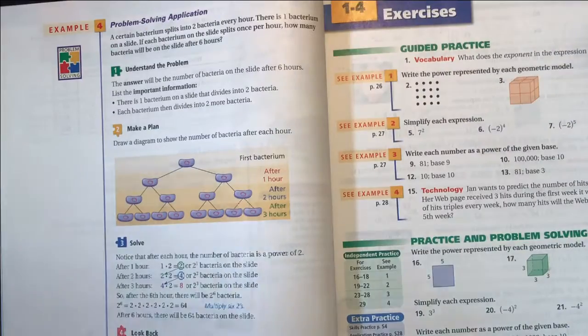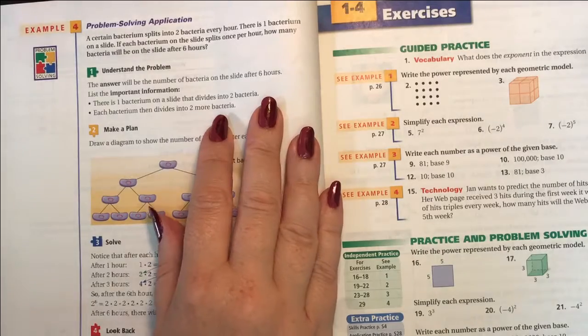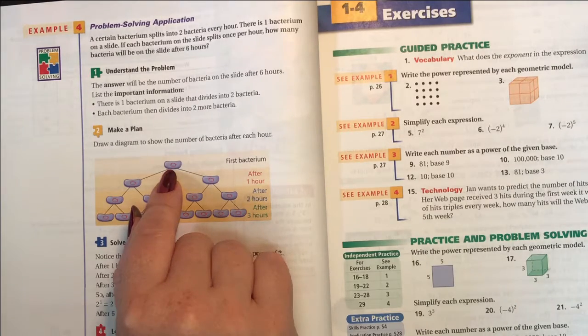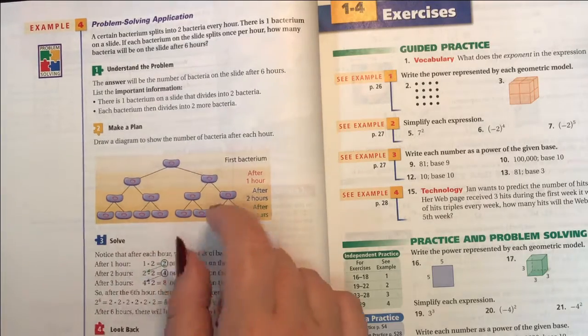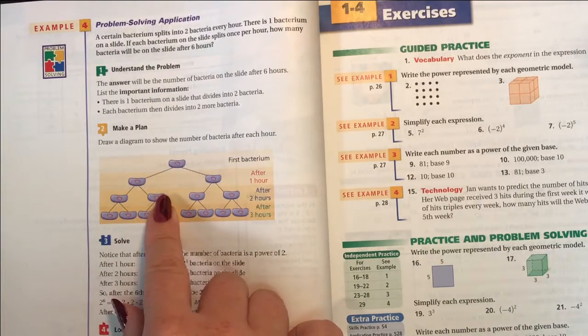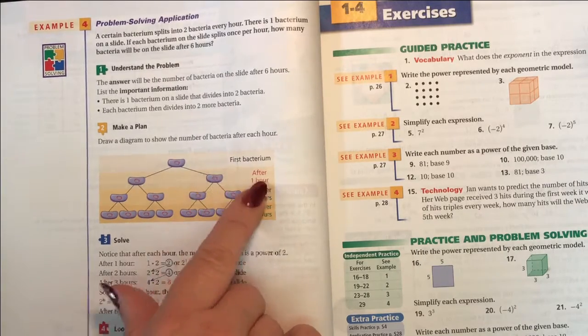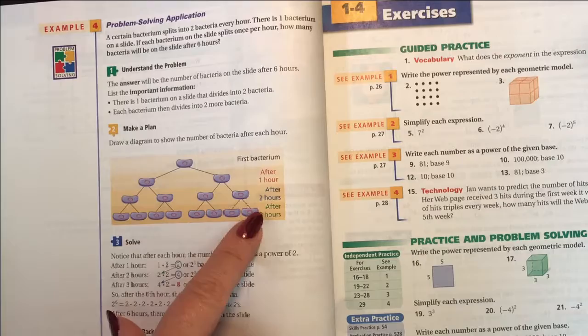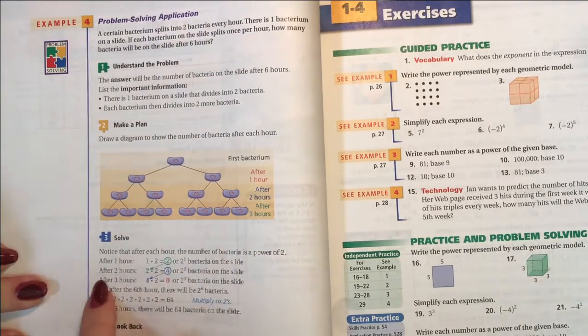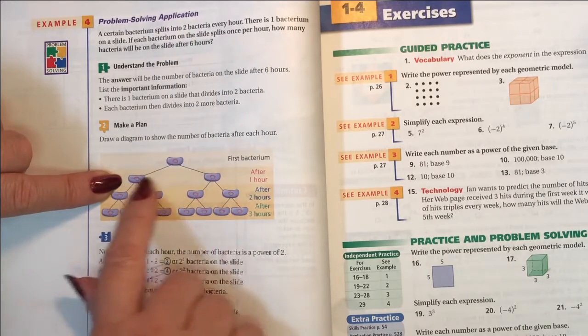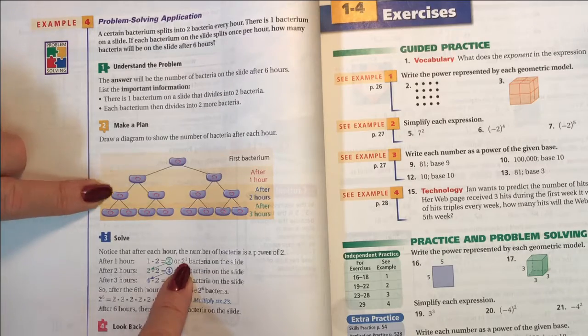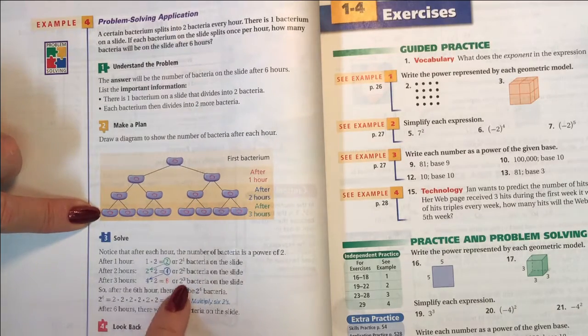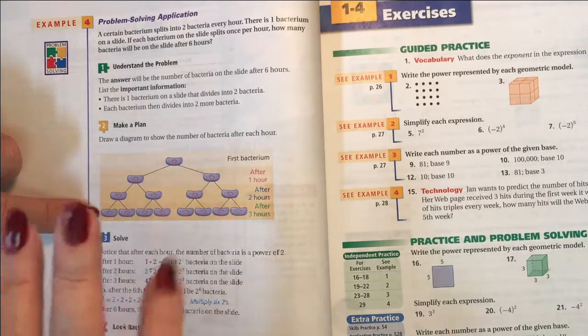Next we're going to do the word problem. On page 28, a certain bacterium splits into 2 bacteria every hour. One bacteria starts out on the slide. If each bacterium on the slide splits once per hour, how many bacteria will be on the slide after 6 hours? So here they've drawn a diagram to help figure out what's going on. After 1 hour, it splits twice. After 2 hours, each of these split twice. After 3 hours, each of those split twice. And what they're trying to help you see is that after 1 hour, it's 2 to the first power. And the second time, it's 2 to the second power. And the third time, it's to the third power. Because 2 times 2 times 2 is 4 times 2 is 8.